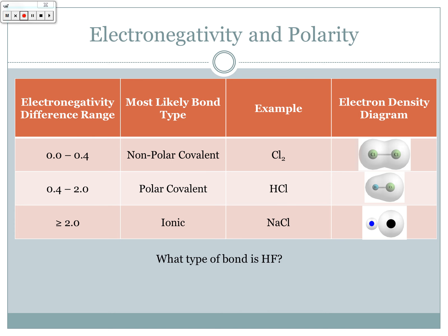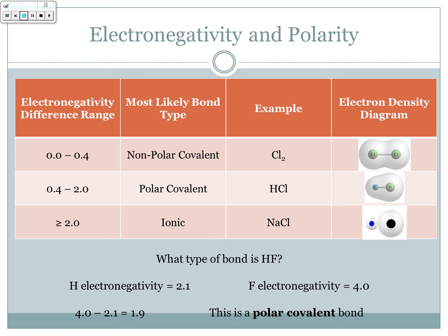So here's a question: what type of bond is HF, or hydrofluoric acid? Take a minute, open your books or Google it, find the electronegativities of hydrogen and fluorine, and calculate what type of bond it's going to be. When you look it up, hydrogen's electronegativity is 2.1 and fluorine's is 4.0. Doing the math: 4.0 minus 2.1 gives an electronegativity difference of 1.9. This falls in the 0.4 to 2.0 range, making it a polar covalent bond — and actually a very polar one, where most of the electrons are attracted to the fluorine.